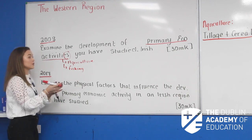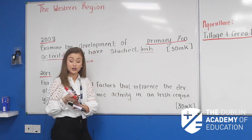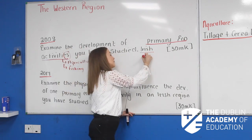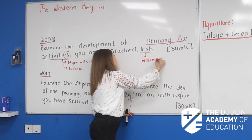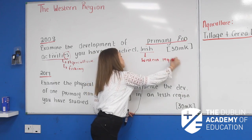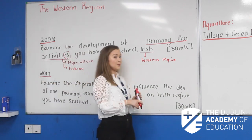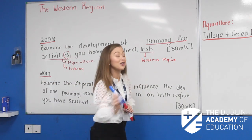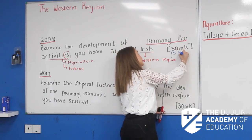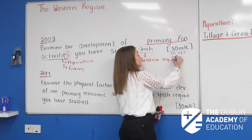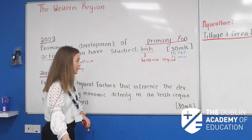When we're talking about our Irish region, highlight 'Irish region' and pop down beside it 'the western region.' Remember: 30 marks means 15 significant relevant points and 15 minutes. So 15 SRPs, 15 minutes.